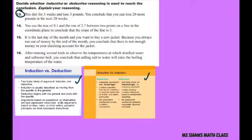Number 13: You decide to diet for three weeks and lose three pounds. You conclude that you can lose 20 more pounds in the next 20 weeks.